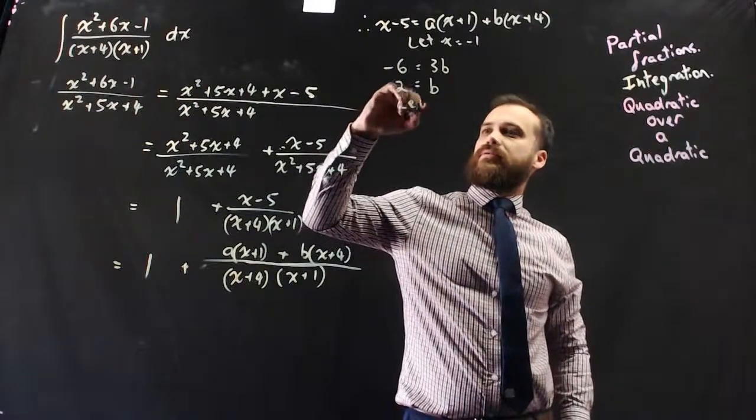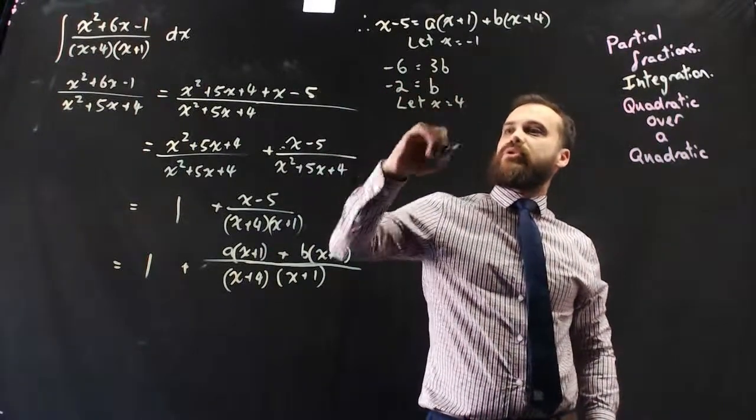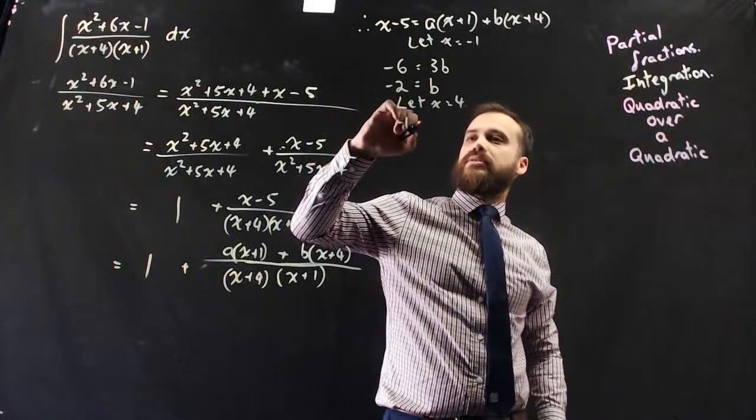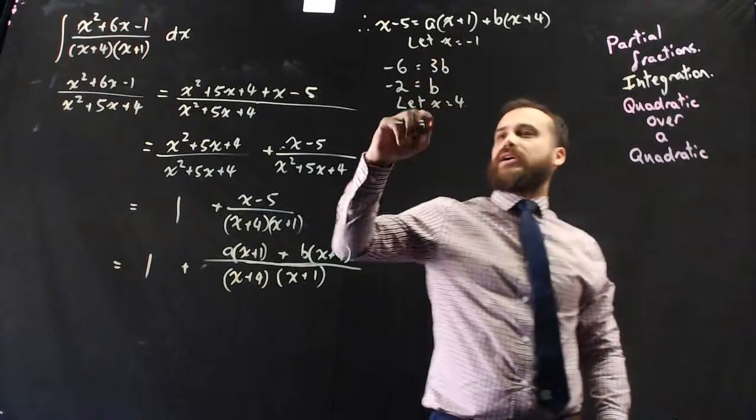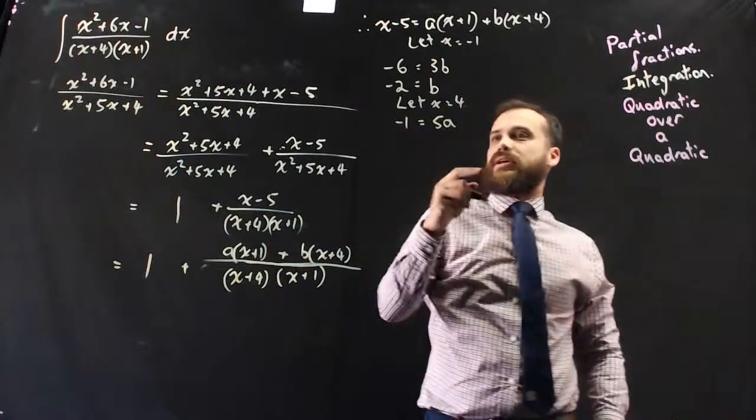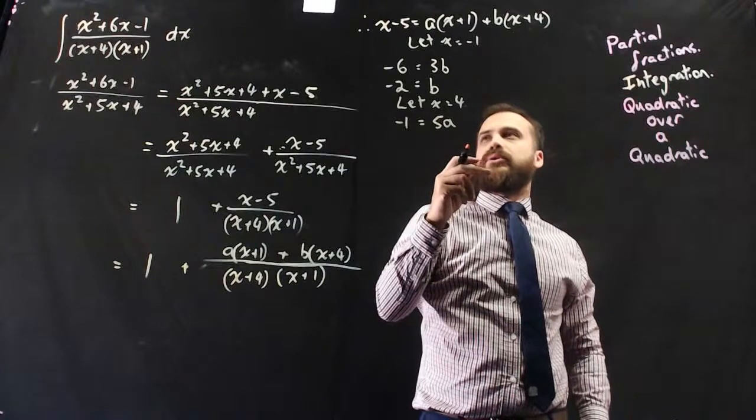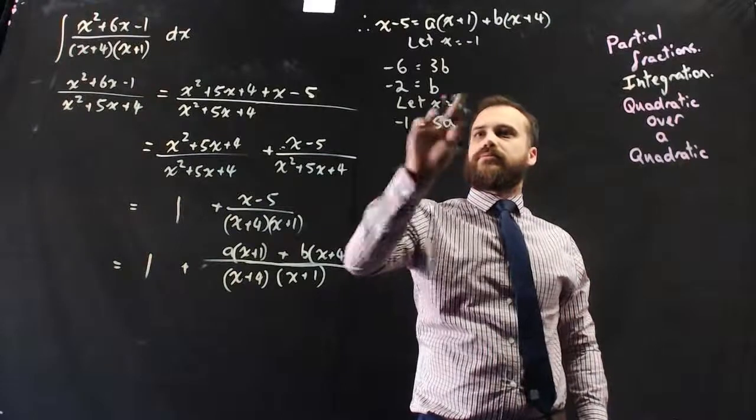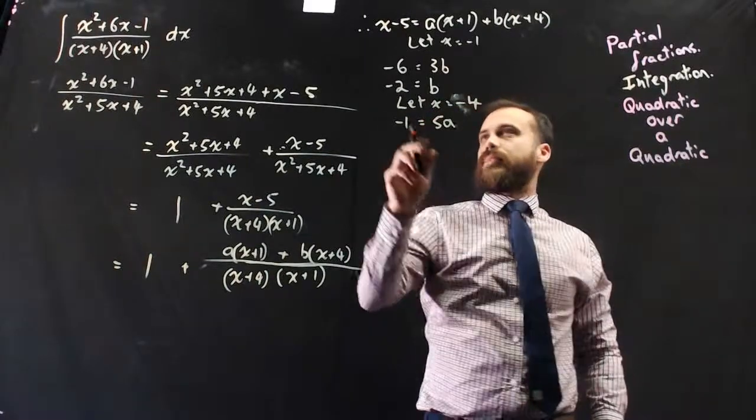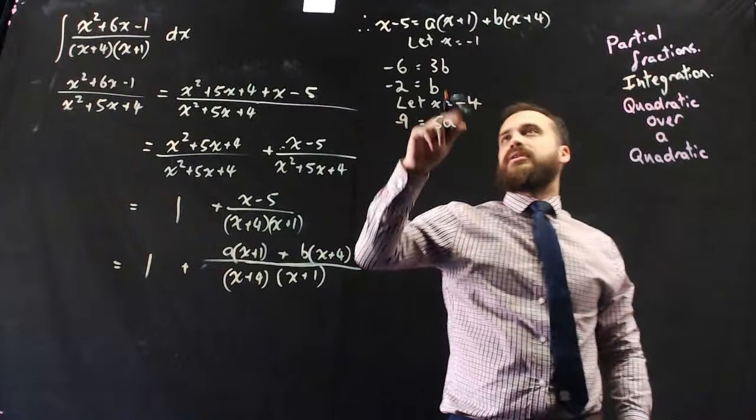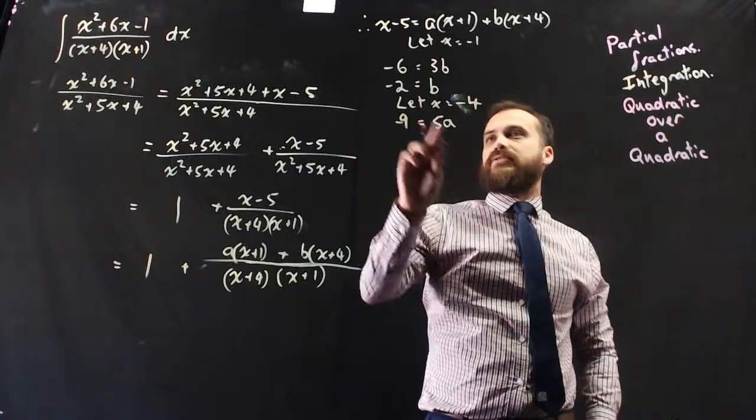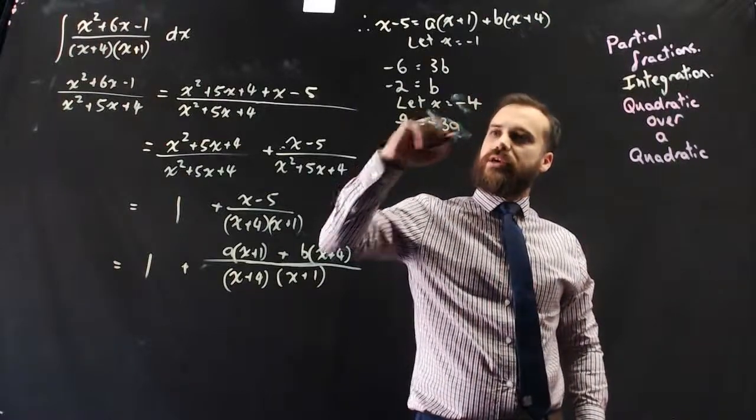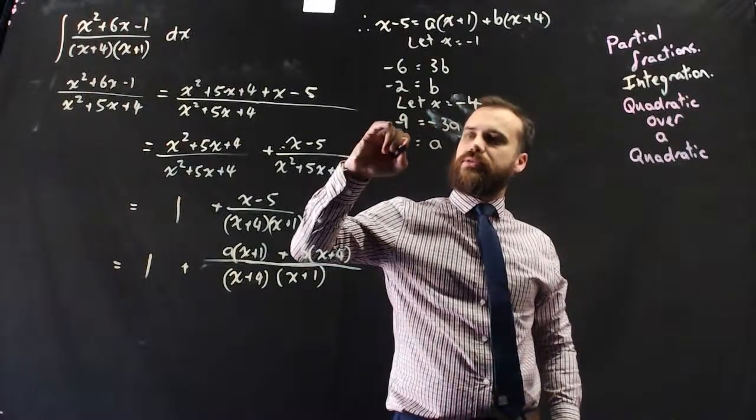And if I let x equal 4... uh-oh, x should be negative 4. So negative 4 minus 5 is negative 9. Negative 4 plus 1 is negative 3. We've got negative 3a. So a equals 3.